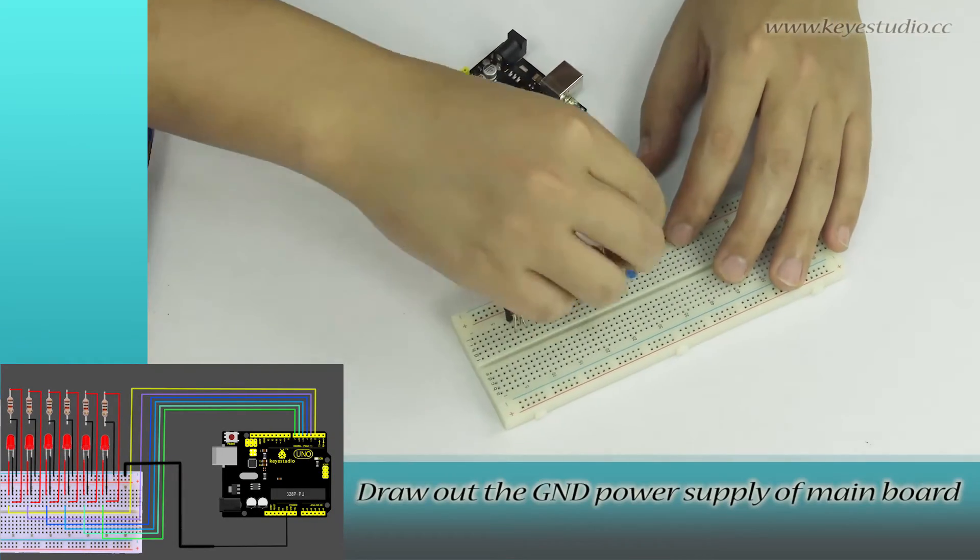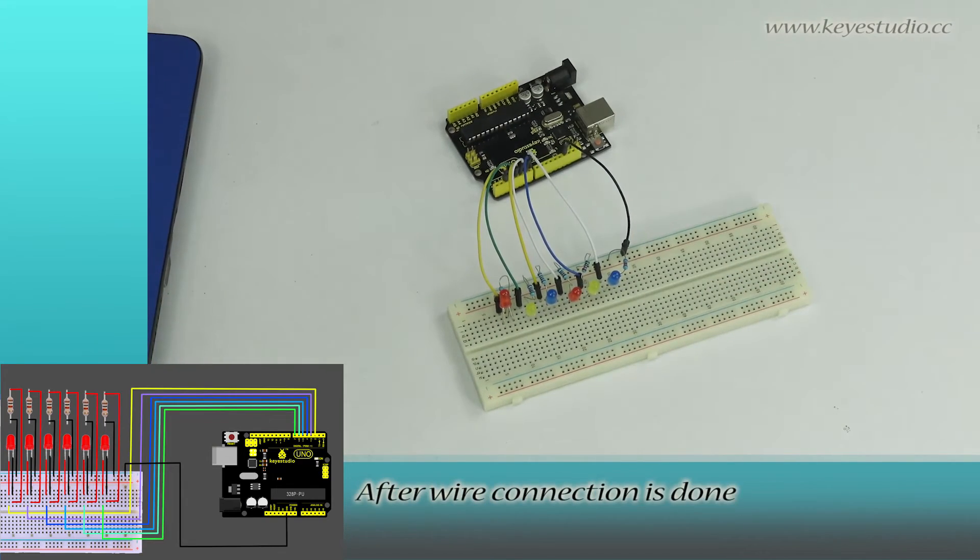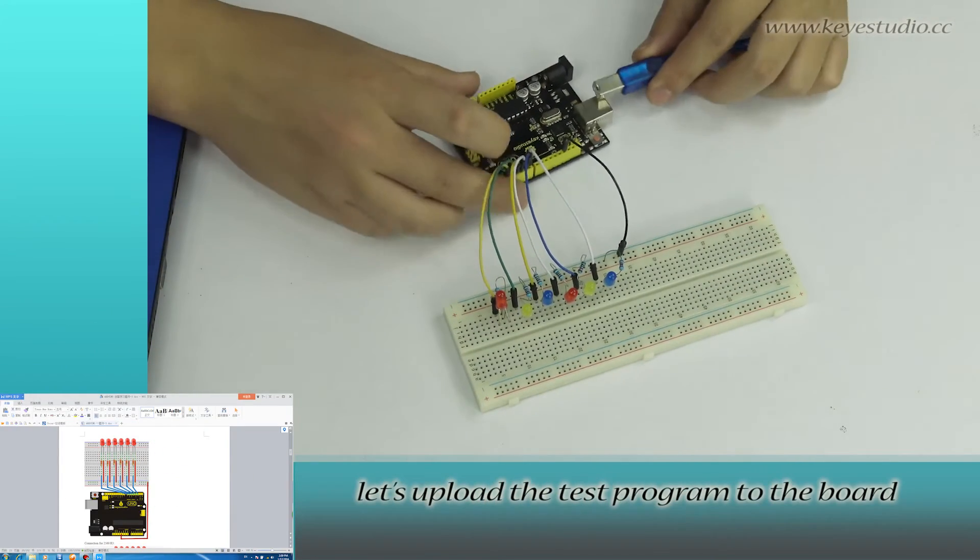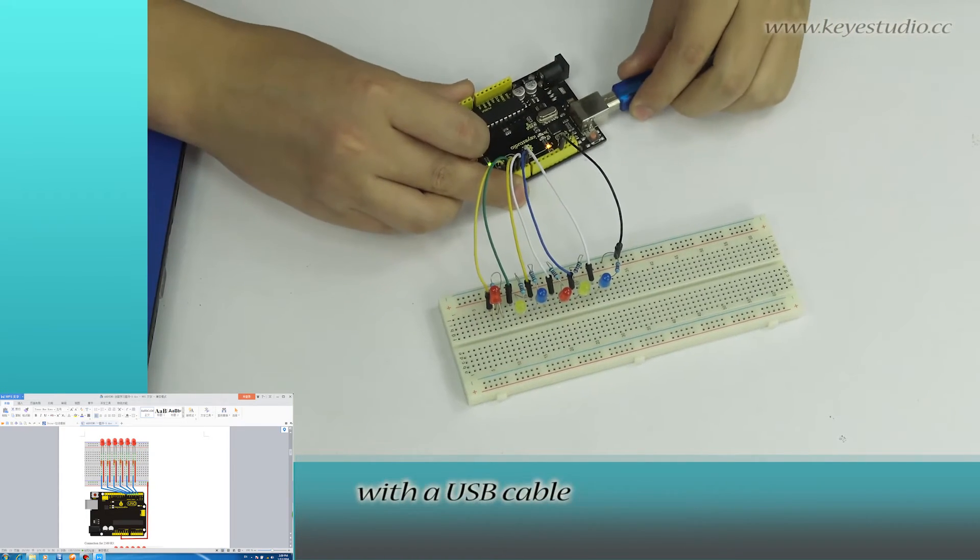Draw out the ground power supply of the mainboard to the breadboard. After wire connection is done, let's upload the test program to the board. Connect your unit to computer with a USB cable.